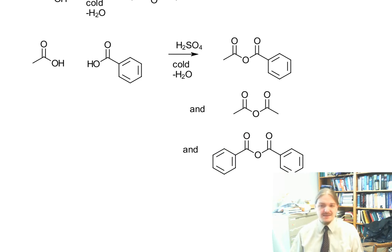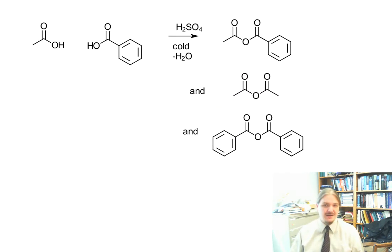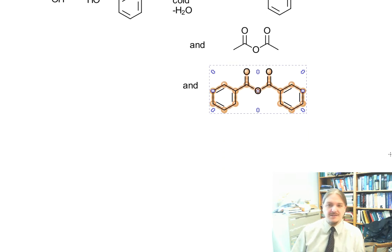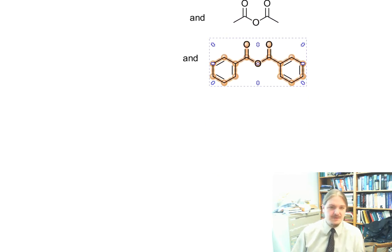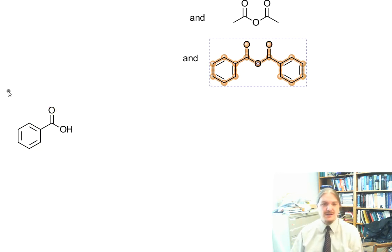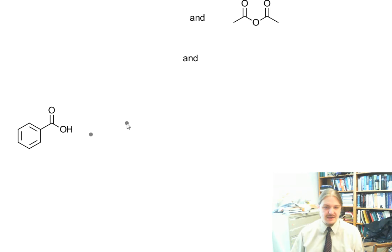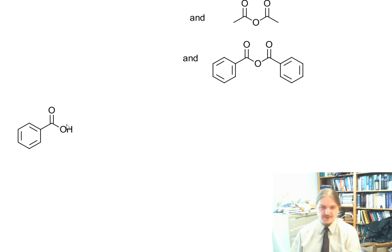If you're interested in making a mixed anhydride or a non-symmetric anhydride, the way to do that is by first converting one of your two acids into the acid chloride using thionyl chloride. You can do it with either acid. I'm going to use benzoic acid.